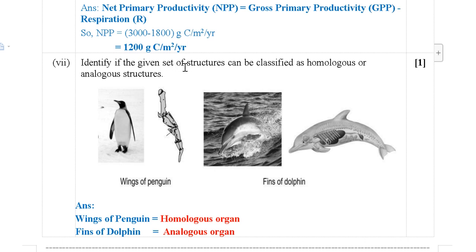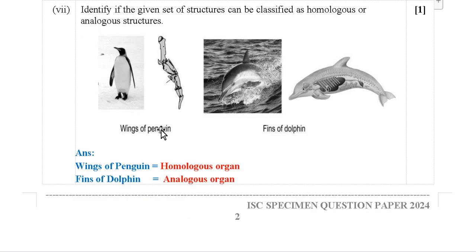Next question: Identify if the given structures are homologous or analogous. The diagram shows wings of a penguin and fins of a dolphin. Wings of a penguin are homologous organs, and fins of a dolphin are analogous organs. This question is from the evolution chapter, illustrating evolutionary origins where organs develop from different sources in different orientations.